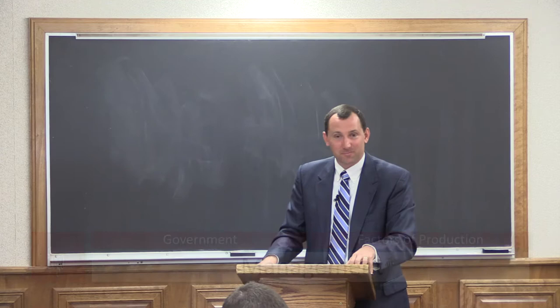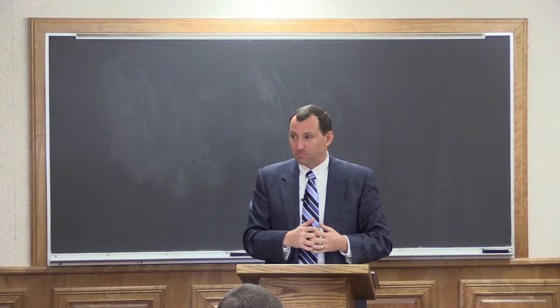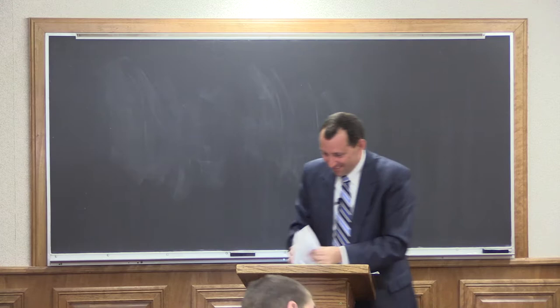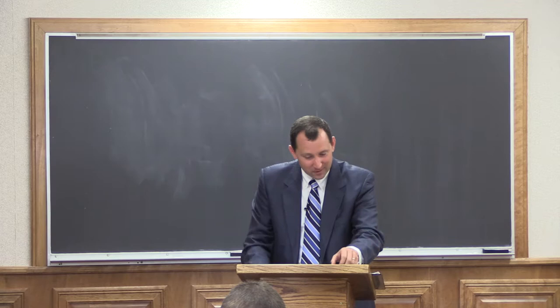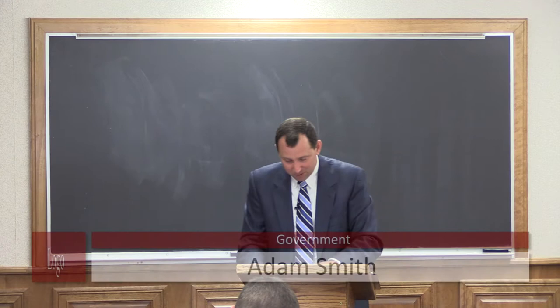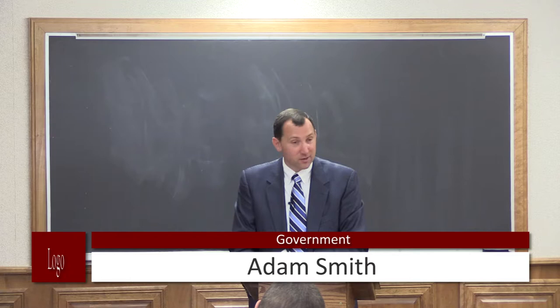Any questions about factors of production? Those are the classic four categories — natural resources, capital, labor, and management — and we need all four for a country to be productive. Now let's talk about Adam Smith. We've got Adam Smith today and then personal finances. The Wealth of Nations, published in 1776, dealt with what was then called political economy — what we'd just call economics today.